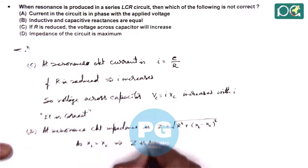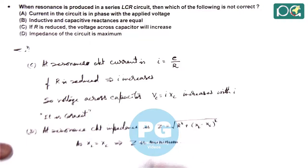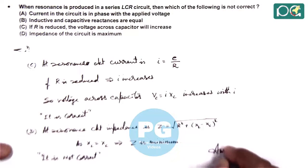So if Z is minimum then obviously option D is wrong. We can write it is not correct. So answer to this question we are having is option D.